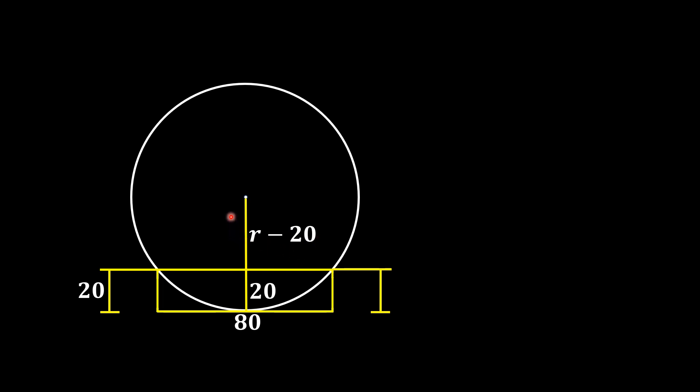Now, we know by a circle theorem that if a radial line is perpendicular to any chord of the circle, then it divides the chord into two equal parts. So this chord is divided into two equal parts. Since this whole length is 80, the length of one side is 40 units.